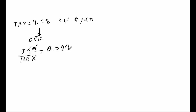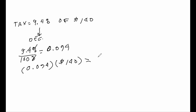Now, to find the exact dollar amount of the tax, we take this decimal and multiply it by the cost of the purchase. So 0.094 times $140 — and remembering the dollar sign — gives us $13.16. The tax on our $140 purchase is $13.16.